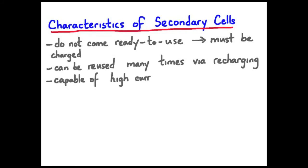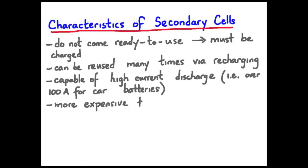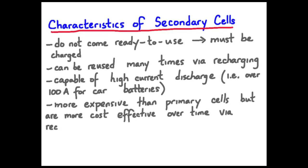Secondary cells are capable of high current discharges. An example is a car battery which can produce upwards of 100 amps. They're more expensive initially than primary cells but over the long run they're more cost effective through recharging. Of course there are also direct current devices meaning the current flows in one direction only. Of course when you recharge you put the current through in the opposite direction using another source.